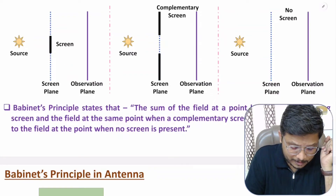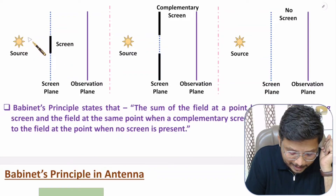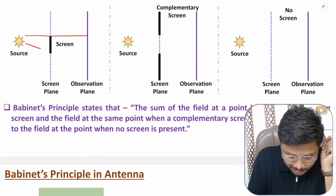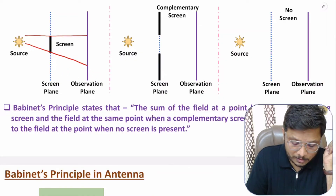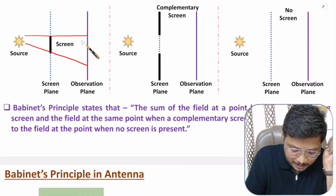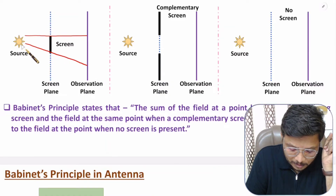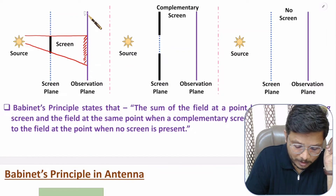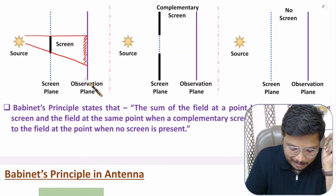The source is radiating light in this direction. The screen is coming in between the source and the observation plane. Because of this, there will be a shadow in certain regions and light will appear on the observation plane in other regions.